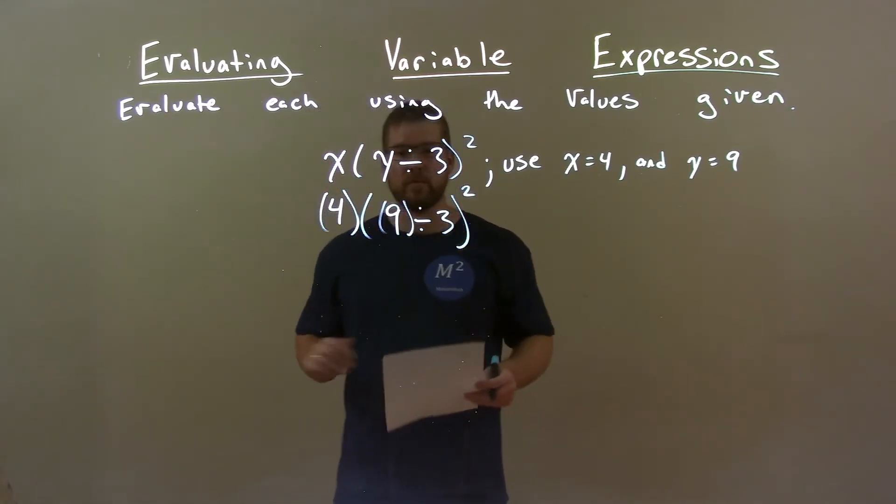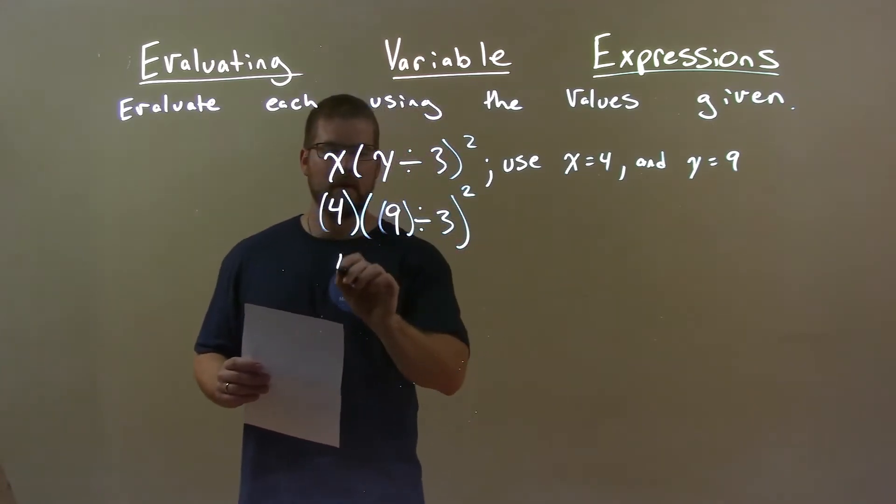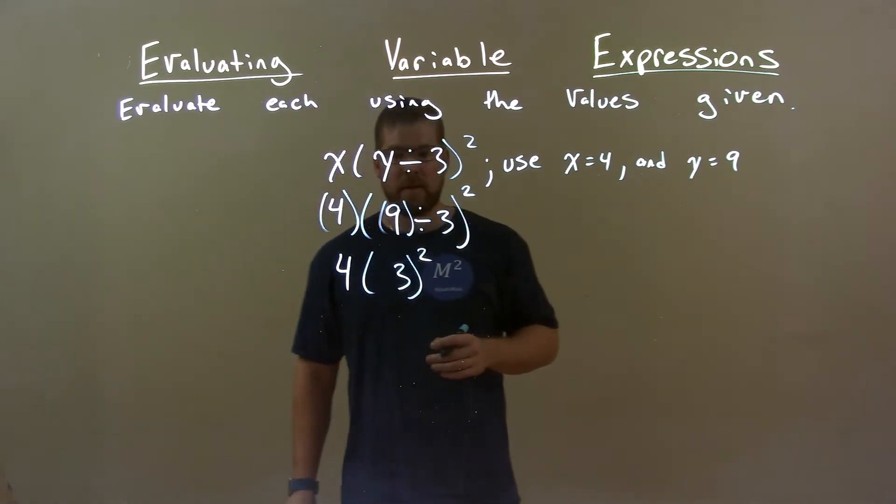Now, we simplify. Inside this big parenthesis comes first. 9 divided by 3 is 3. So, we have 4 on the outside, 3, and we're squaring them, okay?